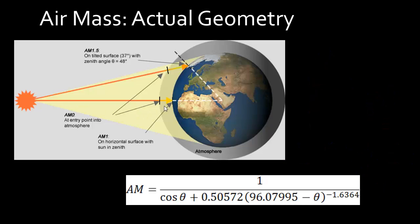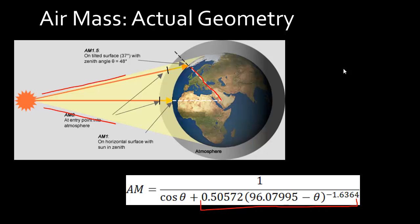That is shown in this more complete formalism here, which takes into account that the sunlight coming from the sun arrives in a finite arc and that the earth has a finite radius. What you get in this formula is an extra added term which accounts for this finite radius and arc length. But for most cases, when you are close to the equator or anywhere in America, you can essentially approximate the air mass by the simpler formula.